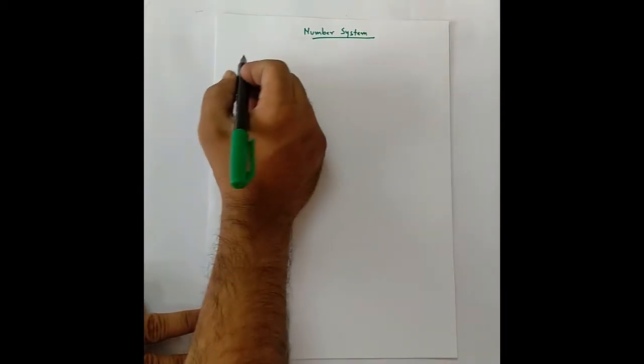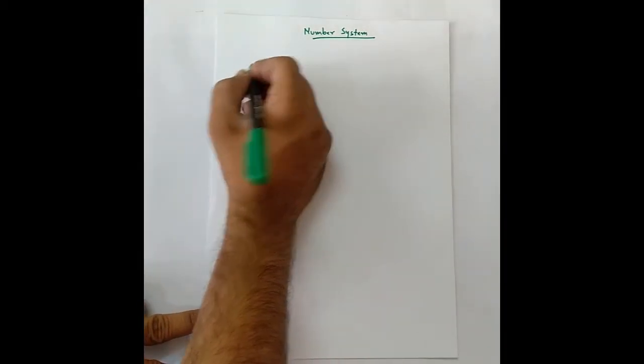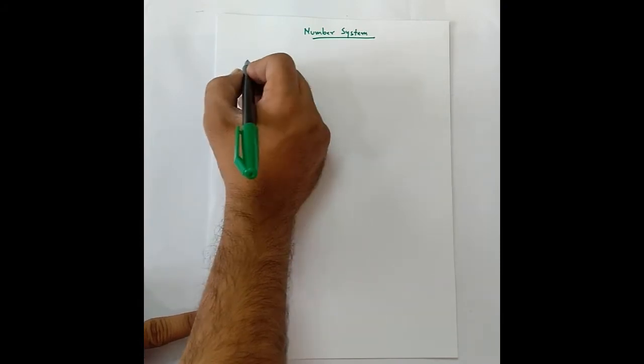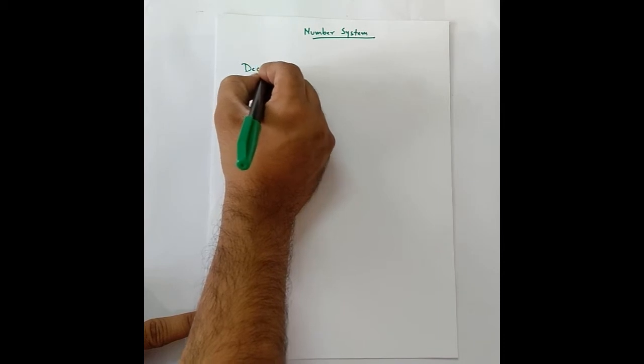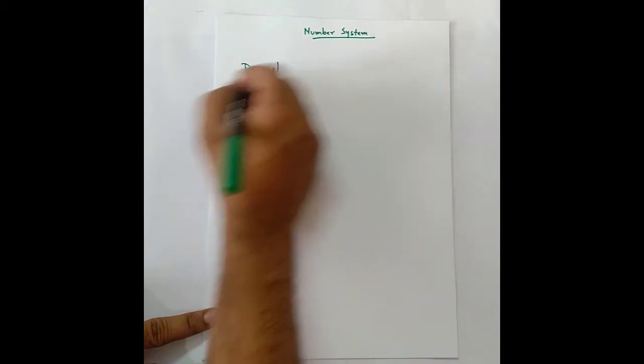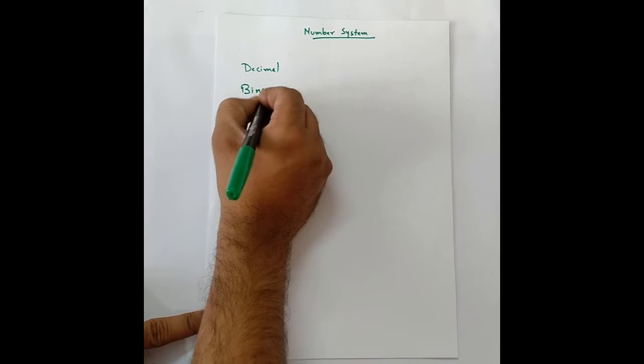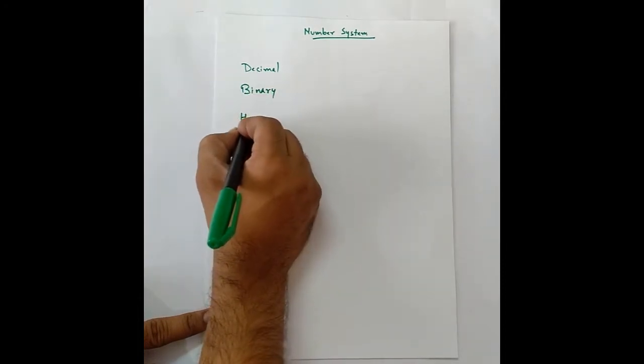Let's discuss number systems. In number systems or in embedded systems, we use mainly three types of number systems or representations: decimal, binary, and hexadecimal.